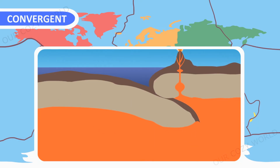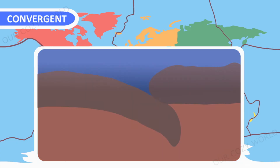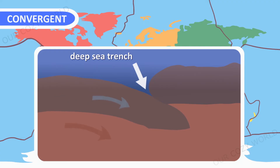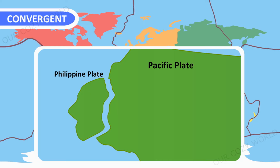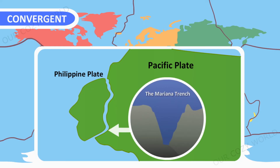The third option is the collision of two oceanic plates. One oceanic plate is eventually subducted under the other, and in the process a very deep trench is formed — a long, narrow, and very deep depression in the ocean floor.